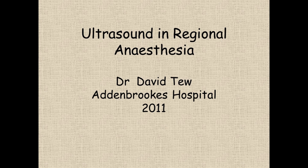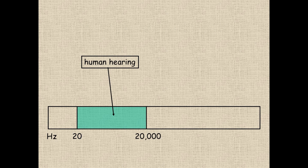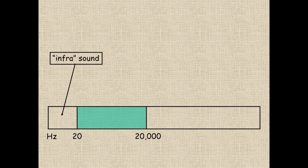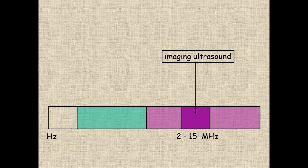Ultrasound in regional anaesthesia. What is ultrasound? The range of human hearing is from 20 to 20,000 Hz. Any sound occurring at a frequency less than 20 Hz is called infrasound, below the range of human hearing. Any sound with a frequency greater than 20,000 Hz is known as ultrasound, above the range of human hearing. Medical ultrasound typically uses frequencies of 2 to 15 MHz.